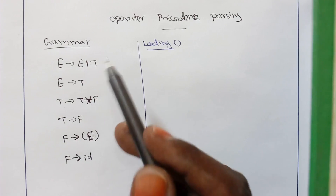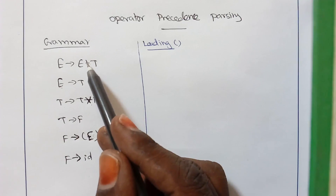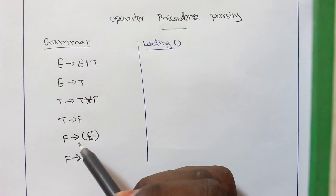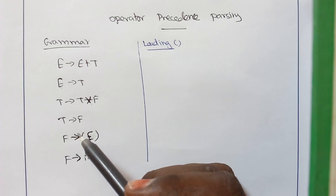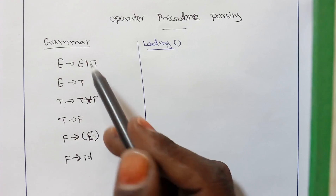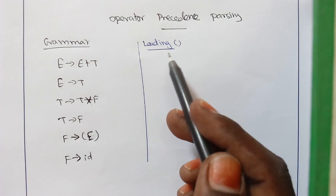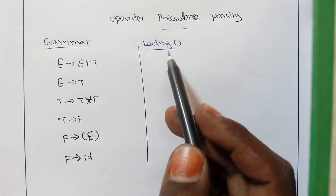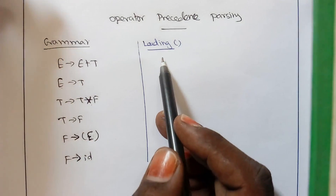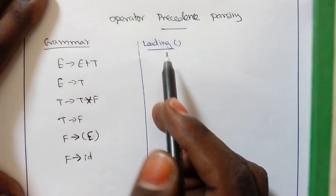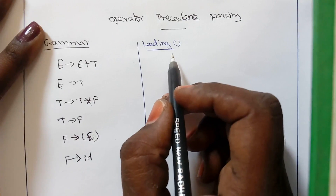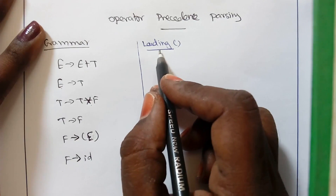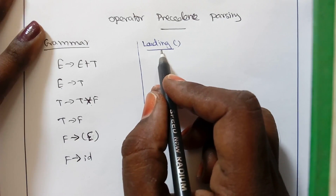Now we are going to find the precedence between all the operators present in the grammar. We are going to use a method called the leading and trailing method for finding this precedence. For finding the leading of a variable, there are two main rules.